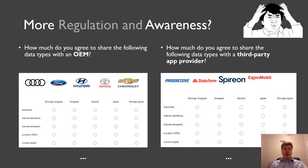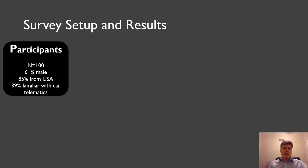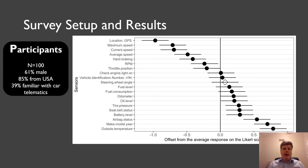So much to regulation. And how about the awareness? In order to assess the sentiment of potential customers towards how sensitive vehicular data is, we conducted a survey. And we asked them two very similar sounding questions. How much do you agree to share the following data types with an OEM and with a third-party app provider? And we also gave them some examples about what these OEMs and app providers could be. So we used 20 data types, and we introduced a five-point Likert scale, ranging from strongly disagree to strongly agree. And this is an overview of our setup. So we recruited 100 participants from Amazon Mechanical Turk. You can see some demographic information on the slide.